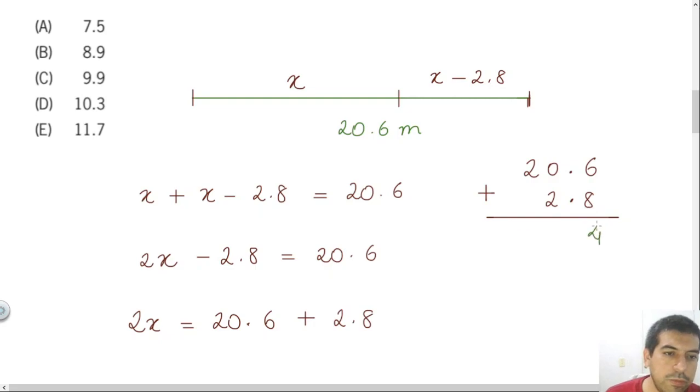6 plus 8 will be 14. 1 plus 0 will be 1, plus 2 will be 3. If you want to fill the blank space with 0, you can. And 2 plus 0 will be 2. Once the points are aligned, it's easy to see the proper place to put the point.